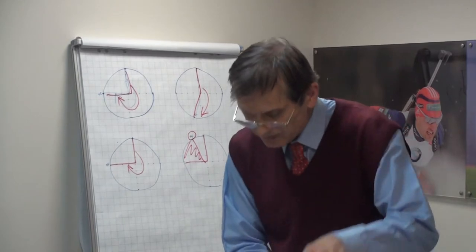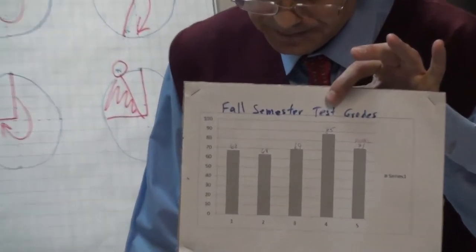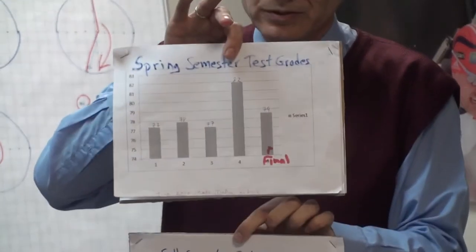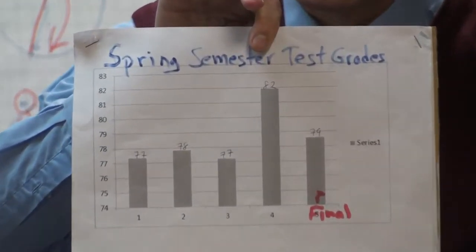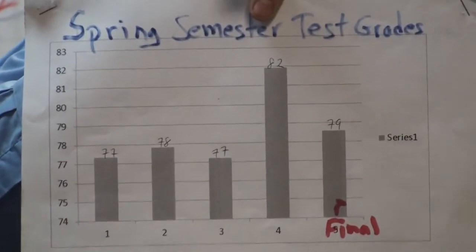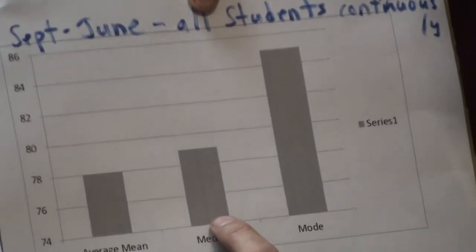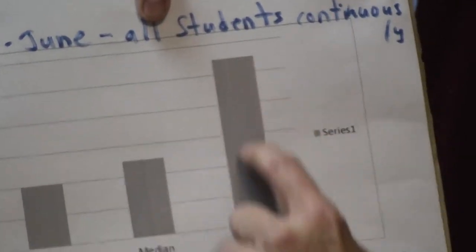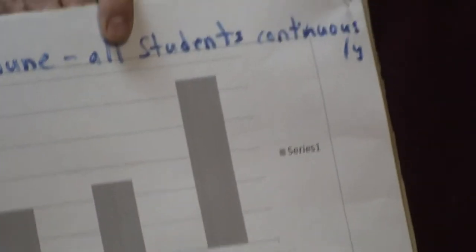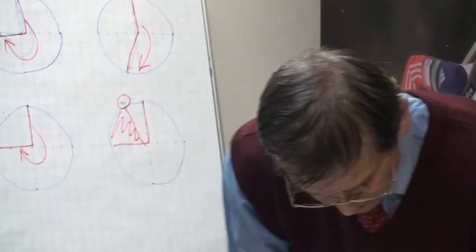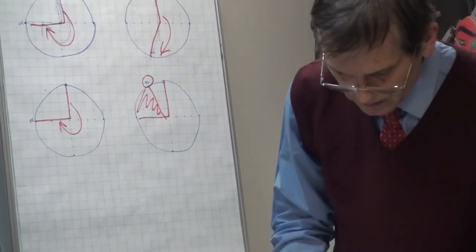So spring, fall semester grades. Four tests. Spring semester grades. I have a chart to put these both together. Mean, mode, and median. Average mean, 78. Median, 79. Highest frequency of grades? 85. Seven students got 85.